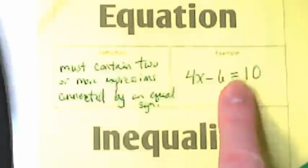So here's an example while you're still writing the definition. 4x plus 6 is an expression. 10 is an expression. But this becomes an equation when we connect them with an equal sign.